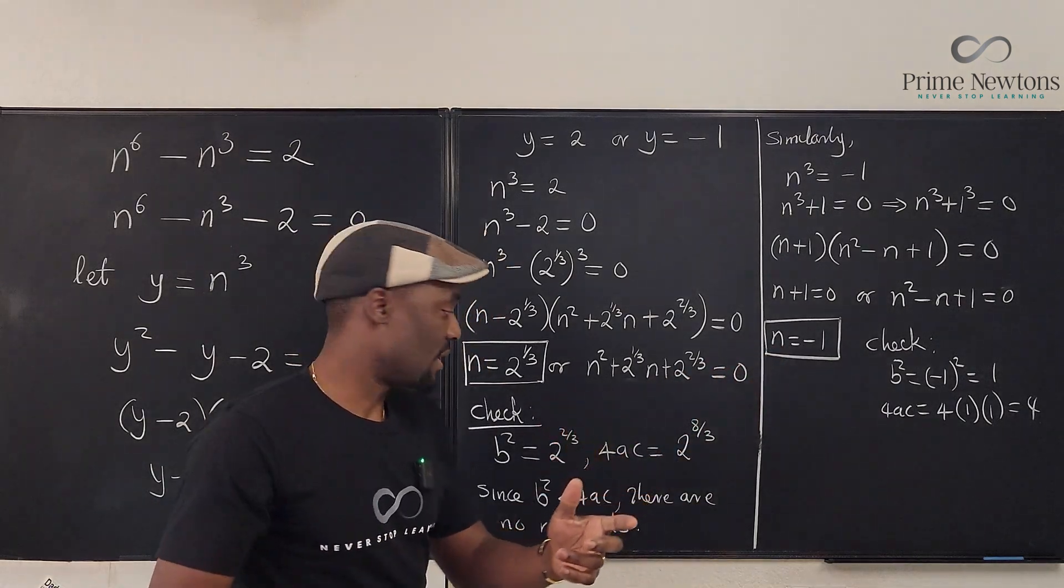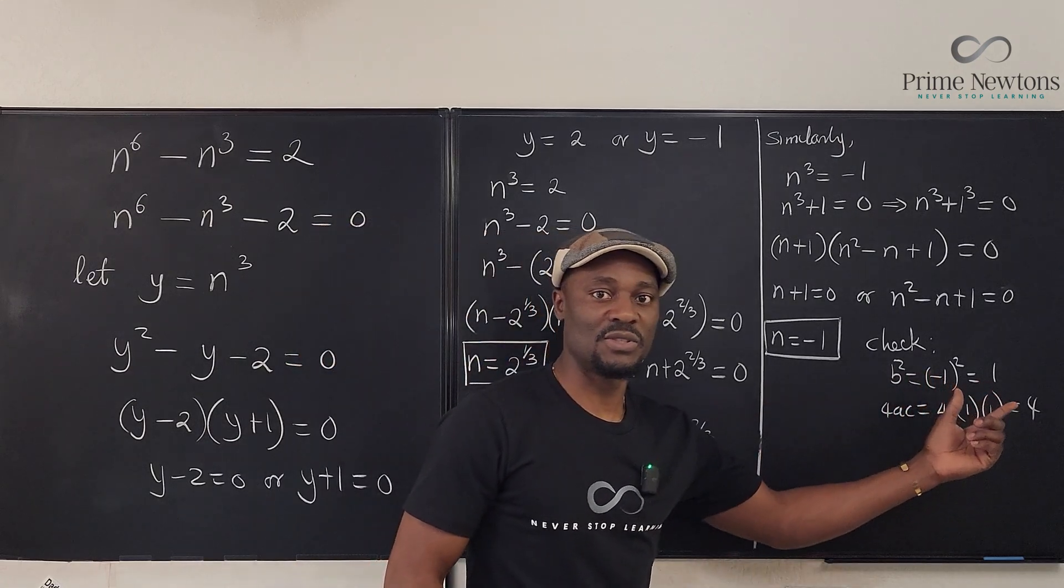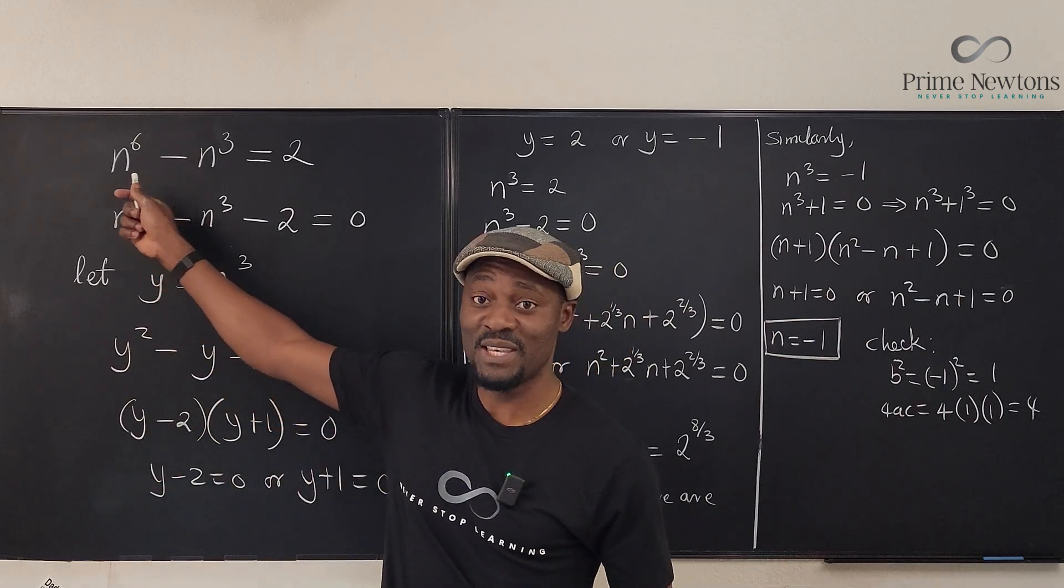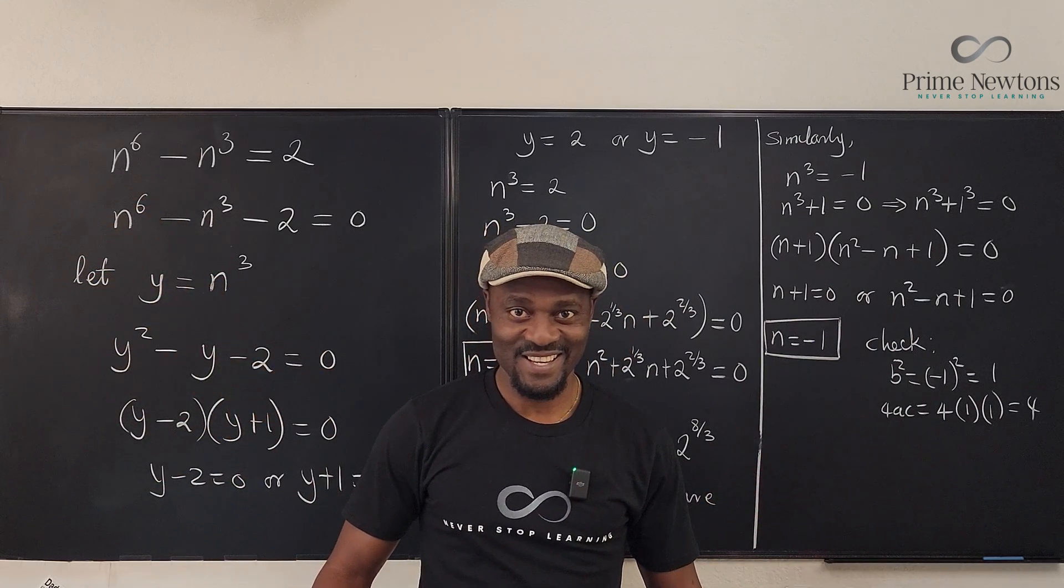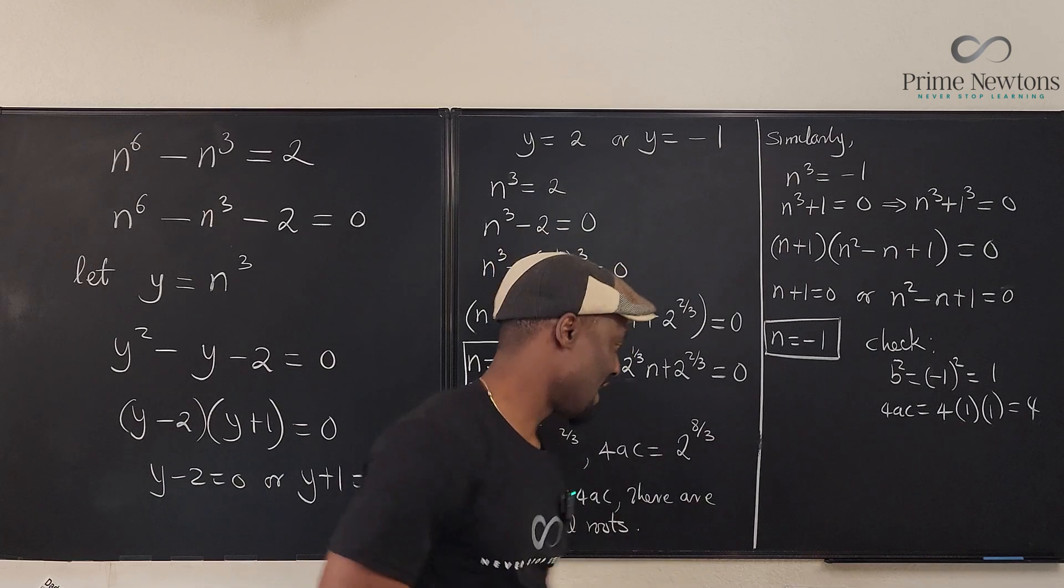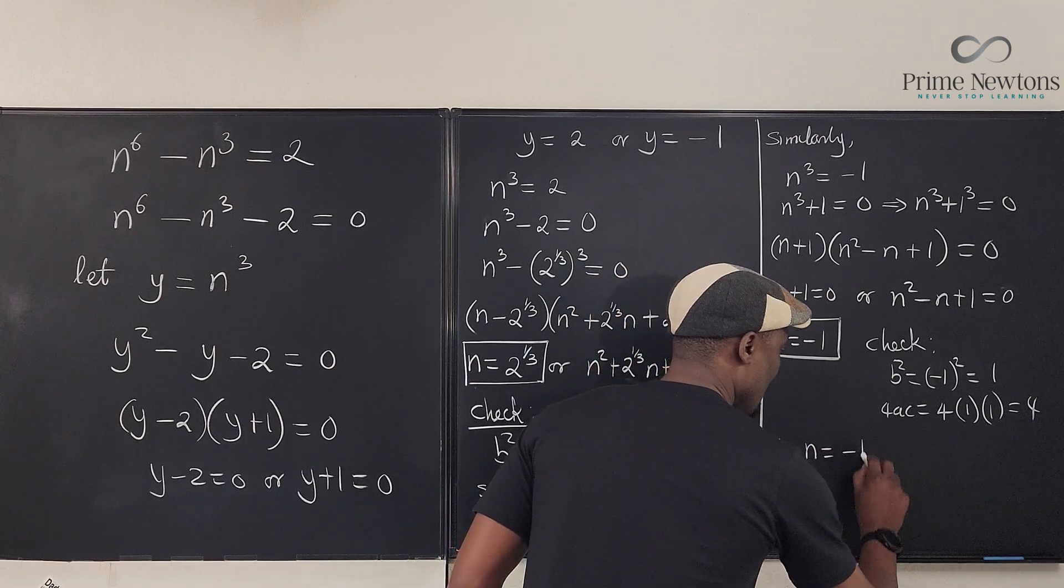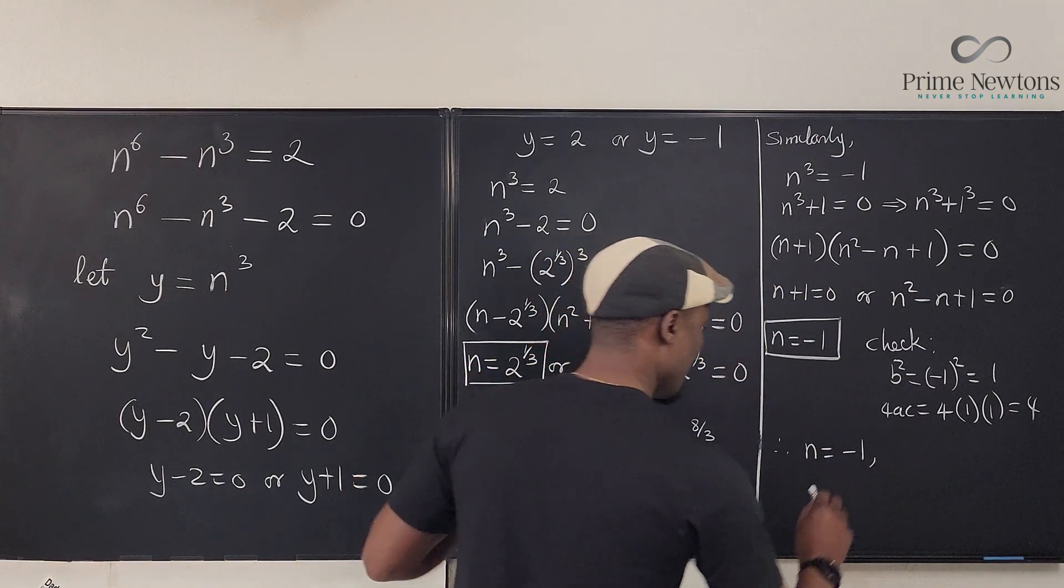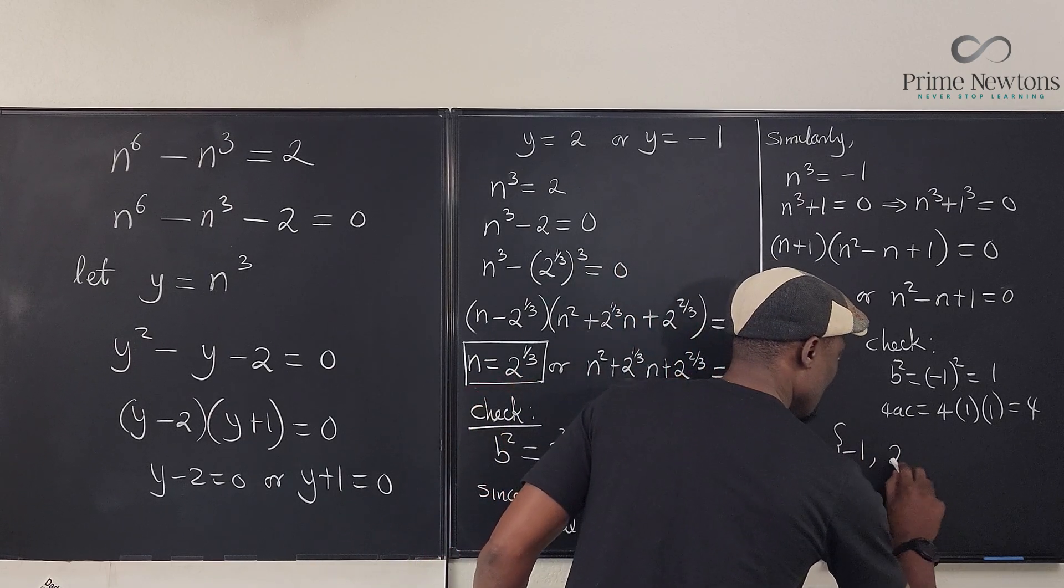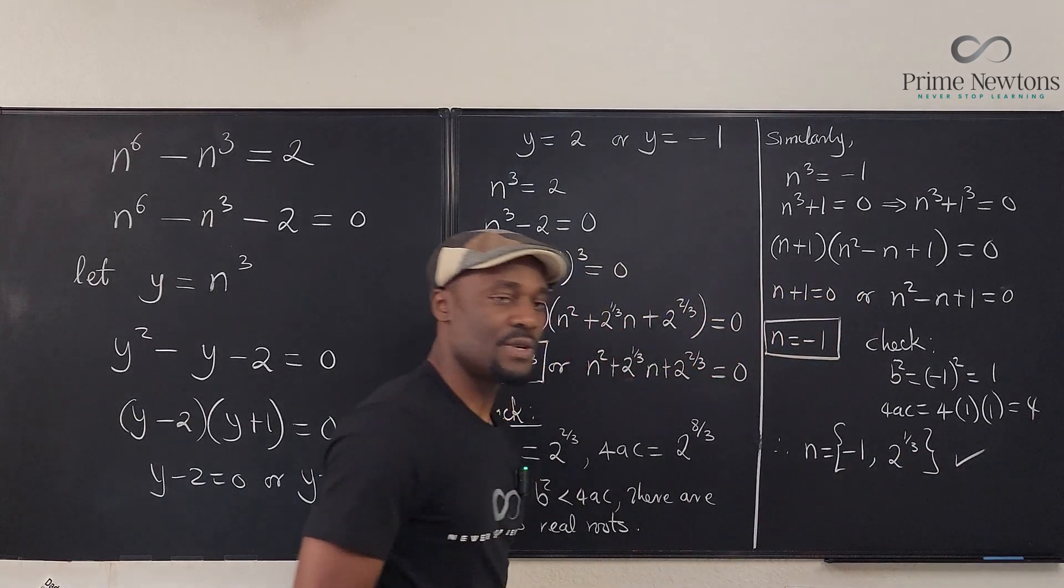And therefore, the only two solutions that we can get that are real are these. And if you use the quadratic formula, you'll be able to get the imaginary roots of these quadratic equations. And you're going to get 2 from here, 2 from here. So, the total number, like I said at the beginning, is 6. 2 real and 4 complex. Okay. So, real, therefore, n = -1 and the set of {-1, 2^(1/3)}. Those are the real solutions.